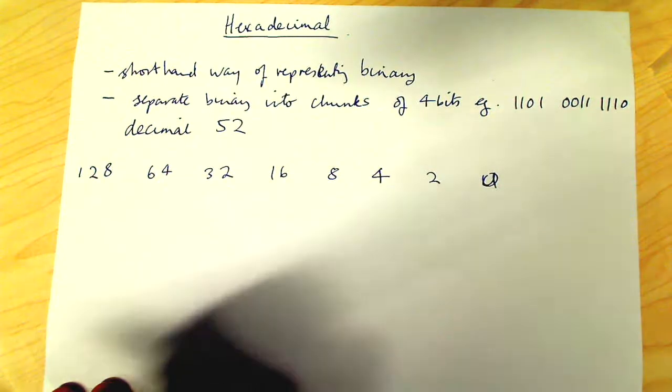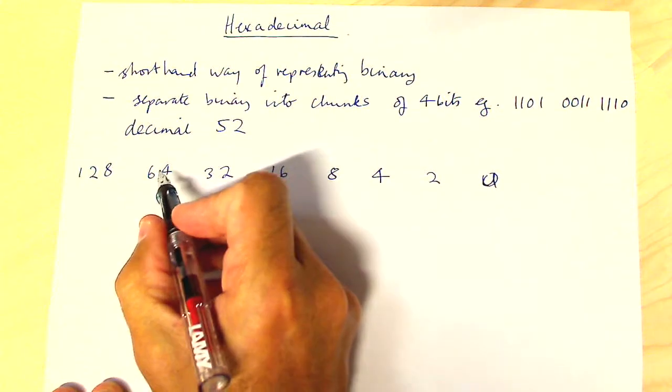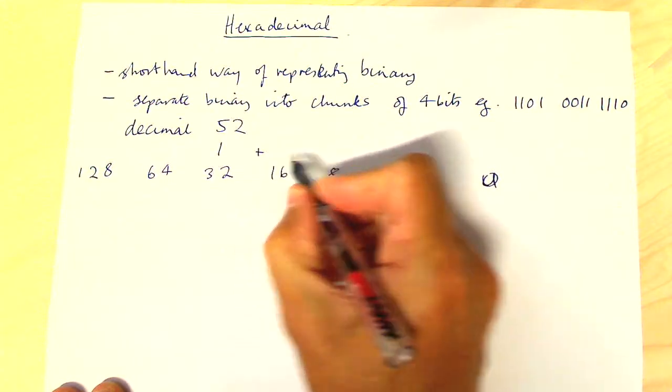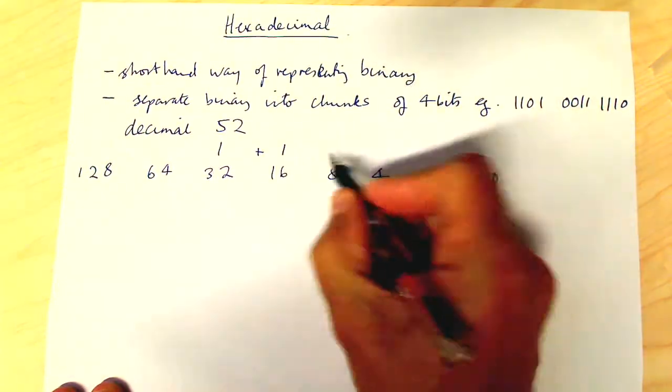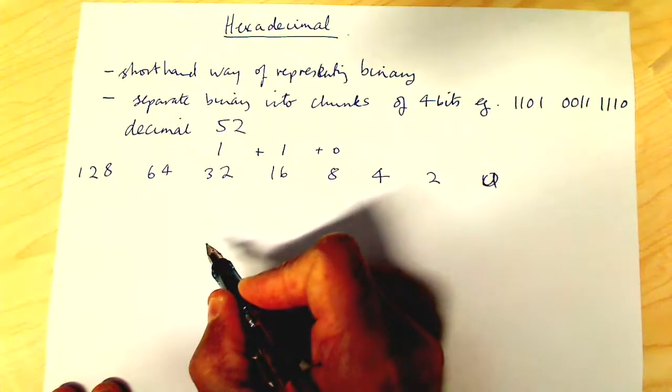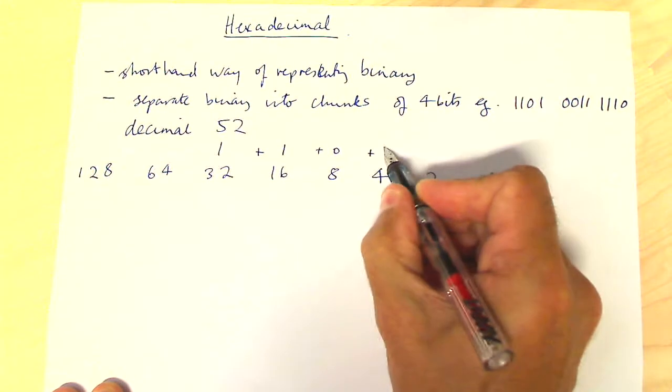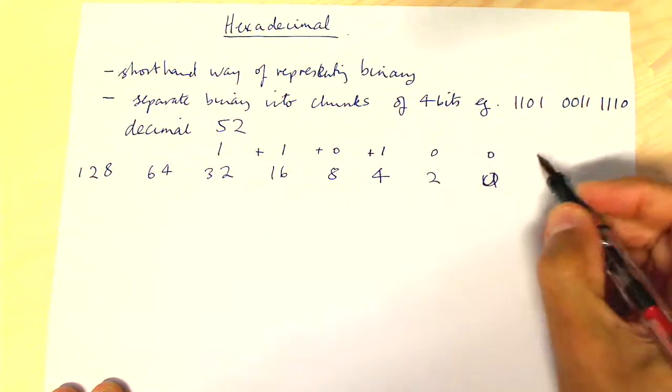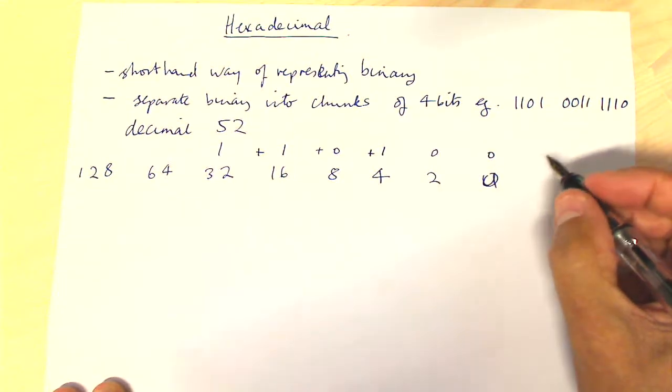So we go no 128s, no 64s. We've got 1 32 plus 1 16 plus 0 plus a 1 there and 0 and 0. So what does our number look like altogether?